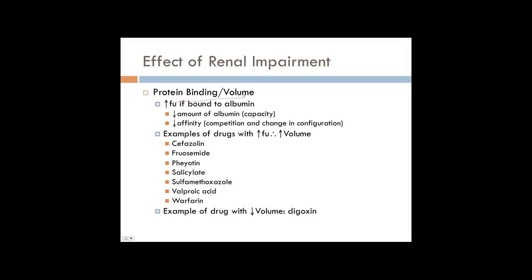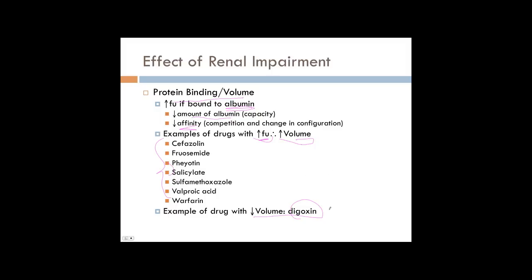What about changes in protein binding and volume of distribution? In chronic renal impairment, you're going to have a decrease in the amount of albumin around, so less albumin to bind drugs. There's also a decrease in affinity for those albumin binding sites. So what you see is an increase in fraction unbound for drugs that are bound to albumin in renal impairment, which can cause an increase in volume of distribution. Digoxin is an example of the other extreme — there's a 50% decrease in the volume of distribution with digoxin in renal impairment — but most albumin-bound drugs increase their volume of distribution.